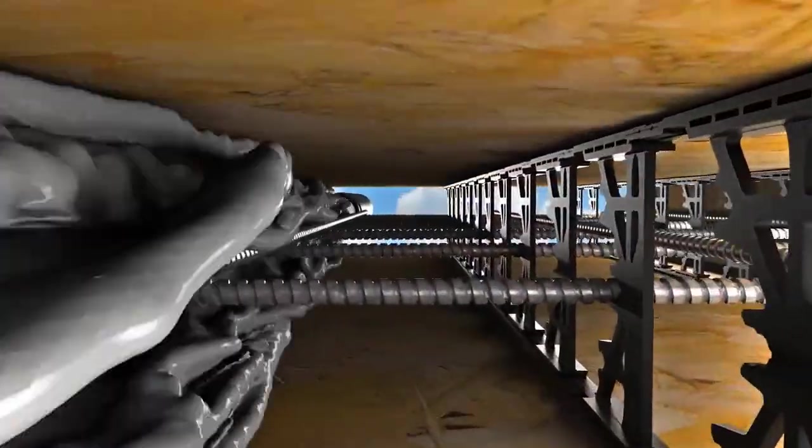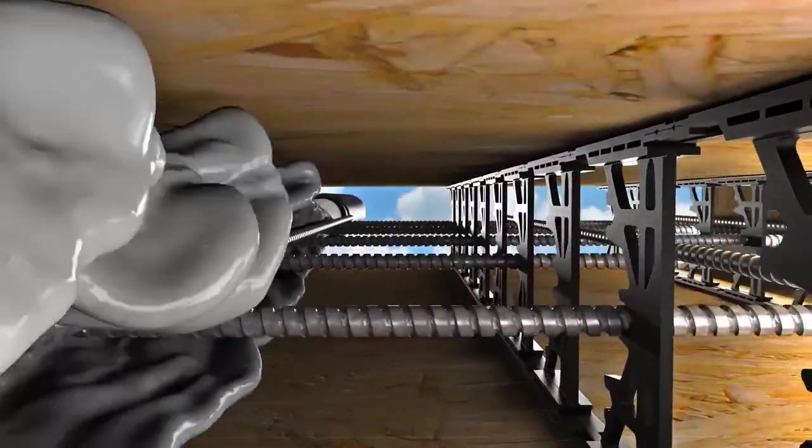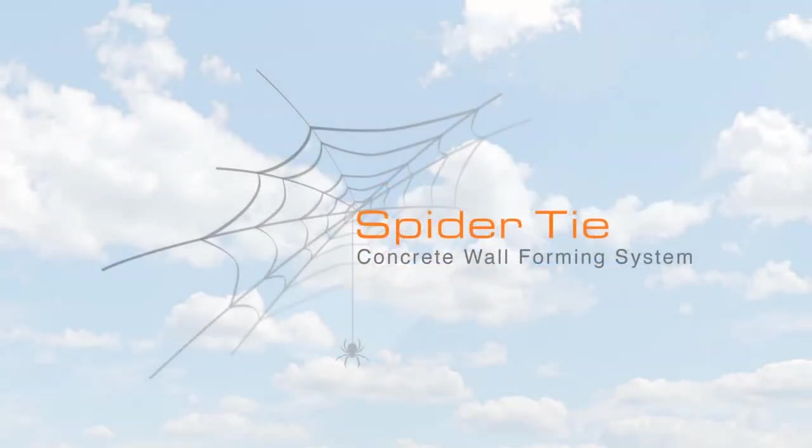So this is the conclusion of part one, showing the basics of the spider tie wall system and its various forms and ways that you can use it. Now we're going to give consideration to the most important part of any structure, and that's the roof, especially in areas where there are severe weather problems such as hurricanes and tornadoes. So we'll be reviewing this in part two.